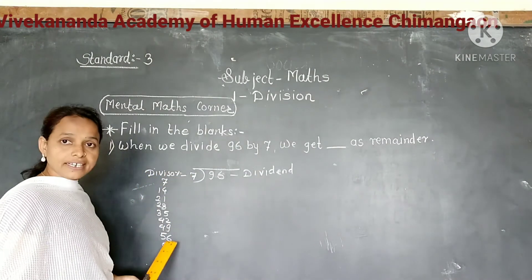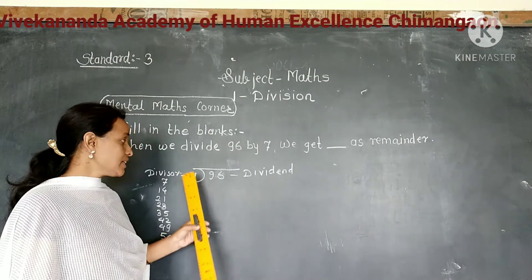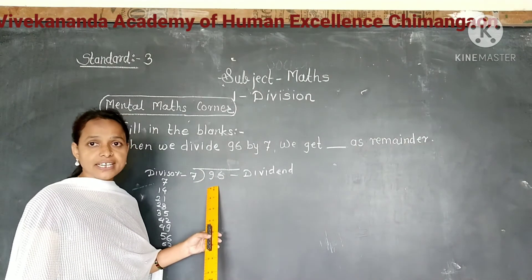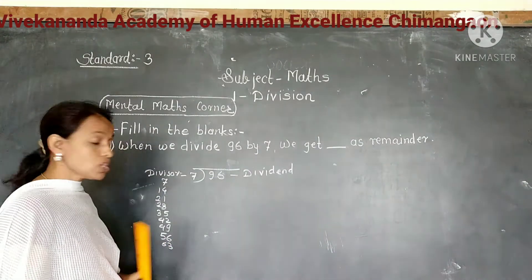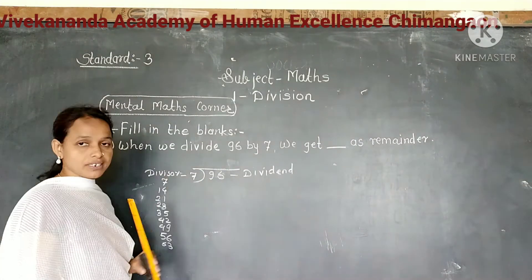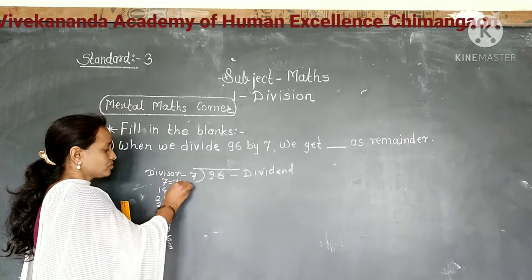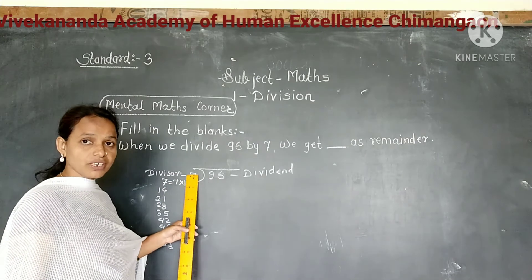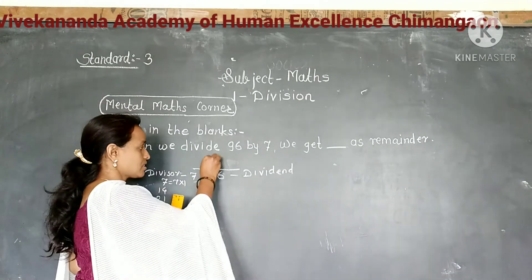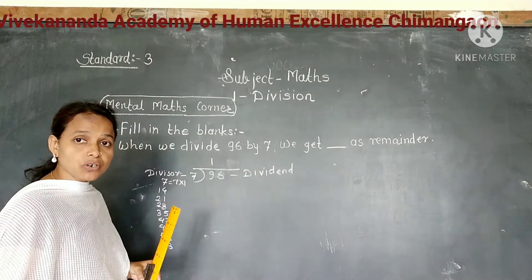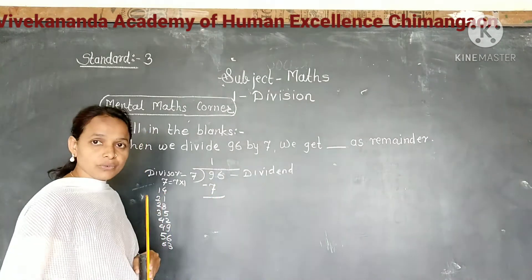Now we write the table of 7. We write the dividend and divisor in the correct places. Now we start from the tens place. The digit at the tens place is 9. But 9 is not in the multiplication table of 7, so we take 7. So we divide 9 by 7 and get 1 as a quotient. Write 1 as a quotient in the tens place and write the product 7 below 9. Subtract, we get 2.